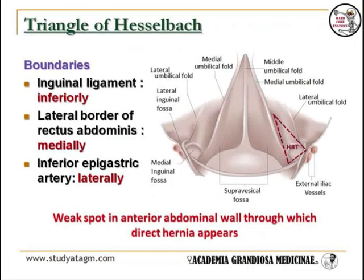The Triangle of Hesselbach is bounded by the inguinal ligament inferiorly, the lateral border of the rectus abdominis medially, and the inferior epigastric artery laterally. It is a weak spot in the anterior abdominal wall through which a direct hernia appears.